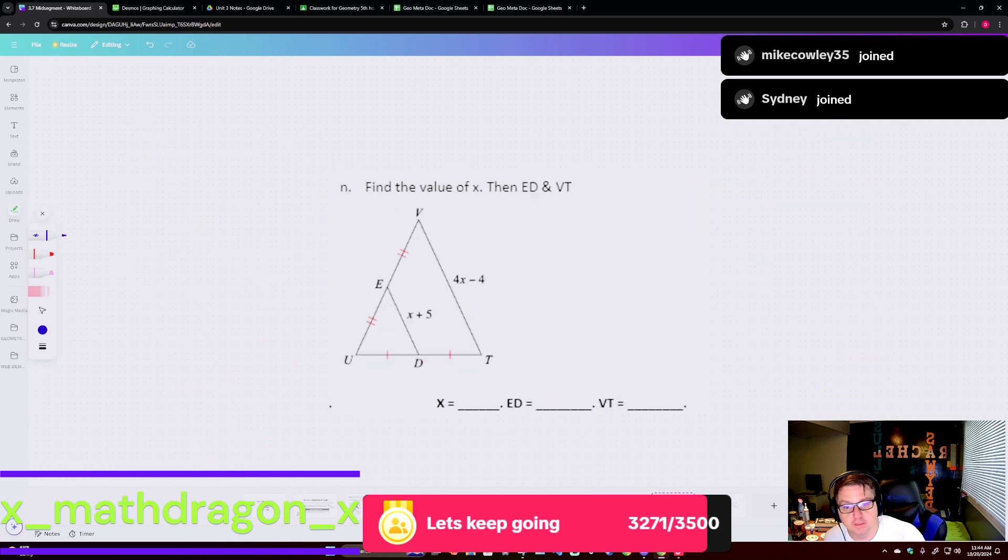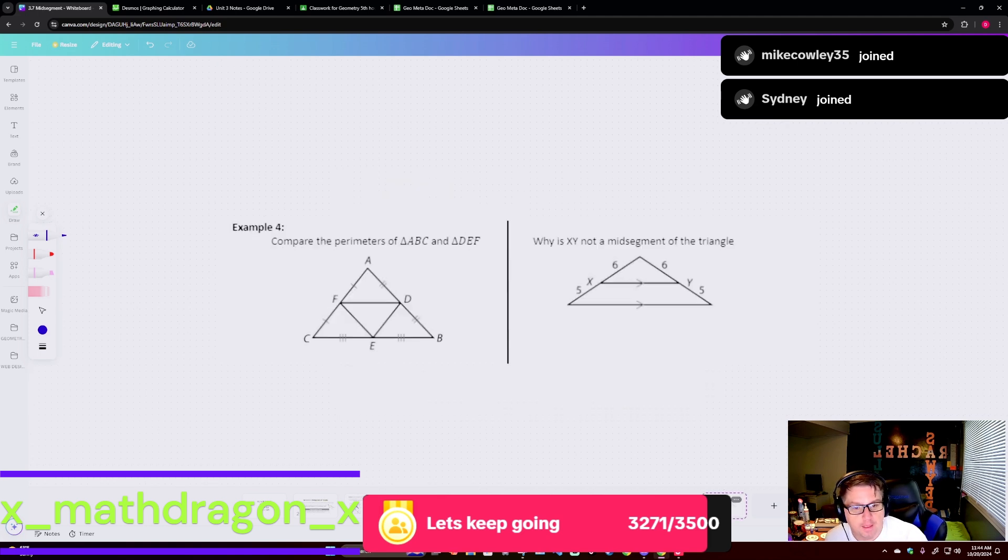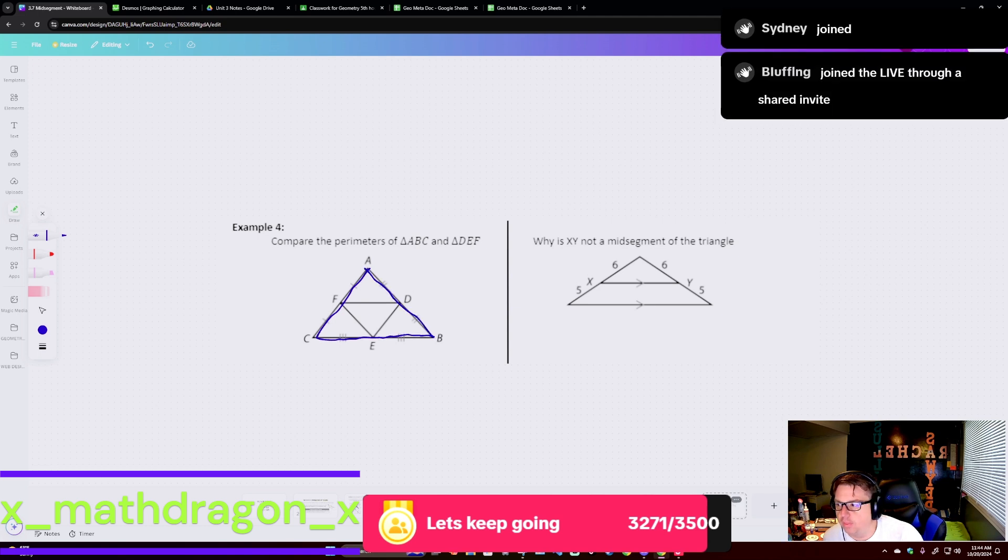Practice, pause, practice on your own. Double this one, set it equal to that one, plug it in. And then lastly, compare the perimeters. So what do we know about the perimeter of this? Well, aren't each of these twice, twice, twice, twice? So the perimeter of ABC is going to equal twice the perimeter of DEF.